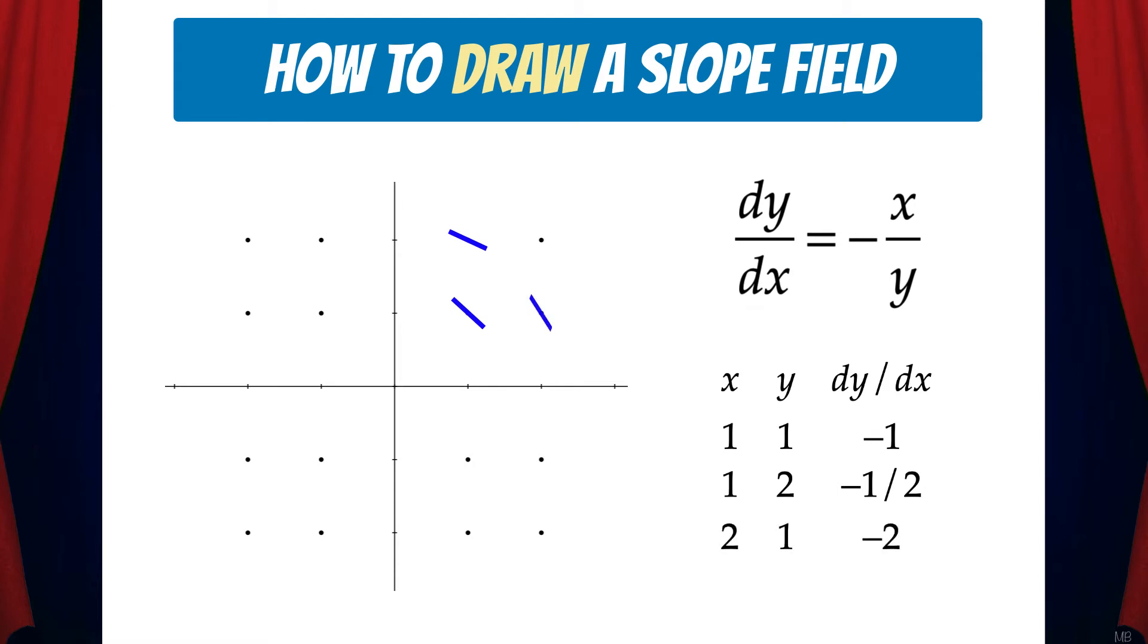At the point (2,1), the slope is negative 2, so we'll draw a little line segment with a slope of negative 2. At the point (0,1), the slope is 0, so we'll draw a little horizontal line. Now, we could keep going point by point, but it's useful to look for patterns.